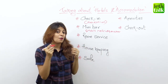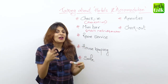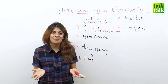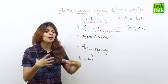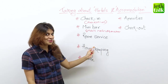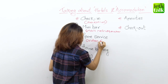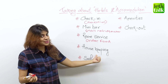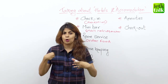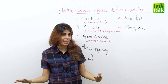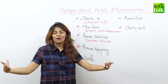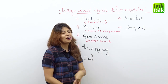Then we have room service. Room service is where you can call and order food to your room — that's so cool! You do not have to make the effort of going down to a restaurant to eat; you can just call room service and order your food. And then we have housekeeping. Housekeeping is cleaning. So if you want your room to be cleaned and your bed to be made, the housekeeping staff will help you with that.